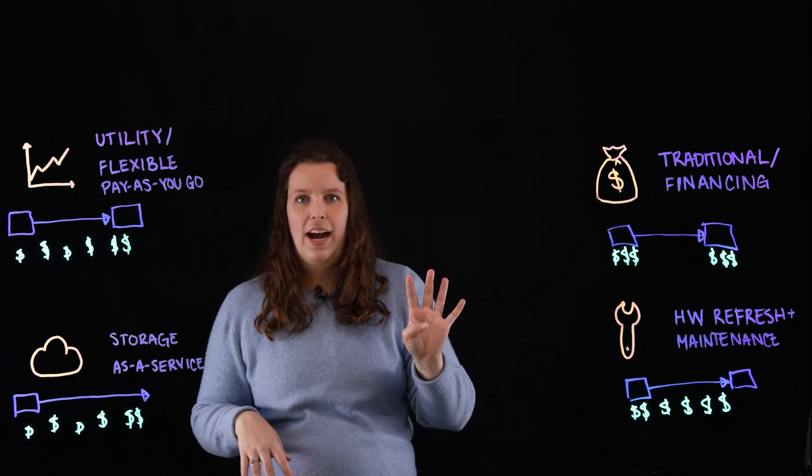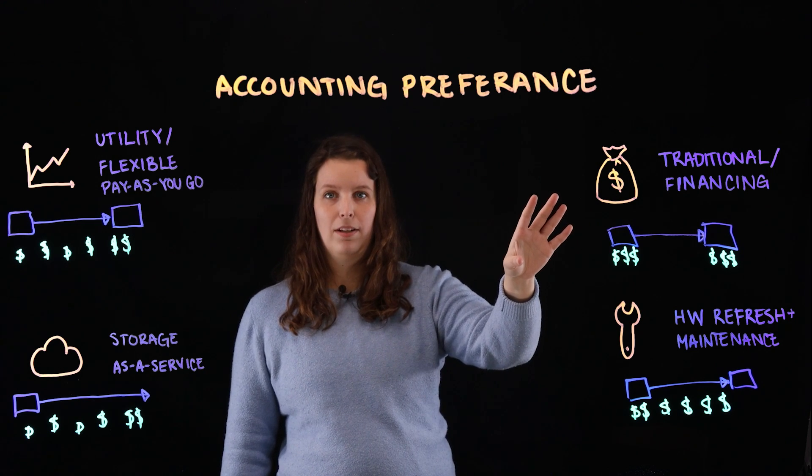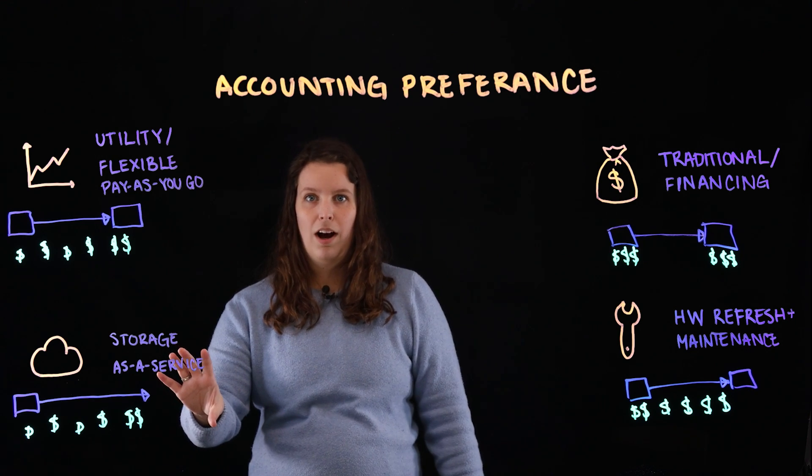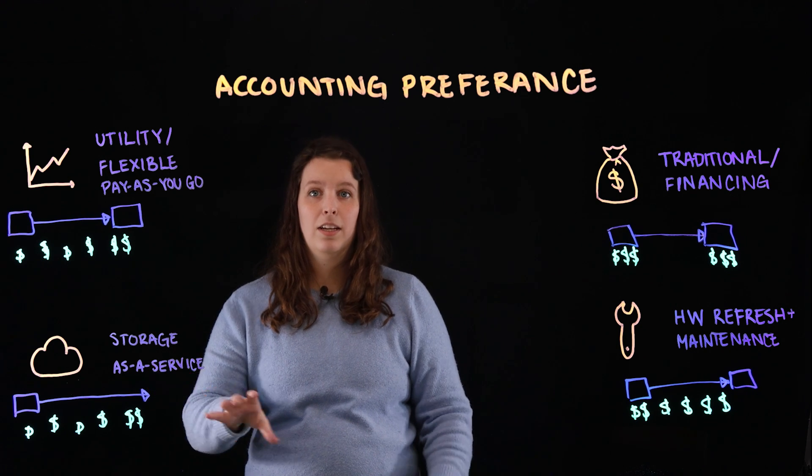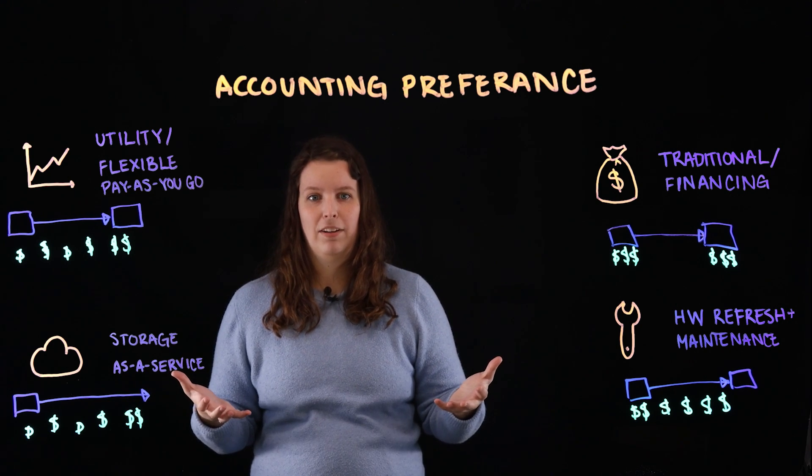The fourth factor is accounting preferences. Some of these lean more capex, capital expense. Some of these lean more opex, operational expense, which is right for you and your company. Talk to your accounting division about this.